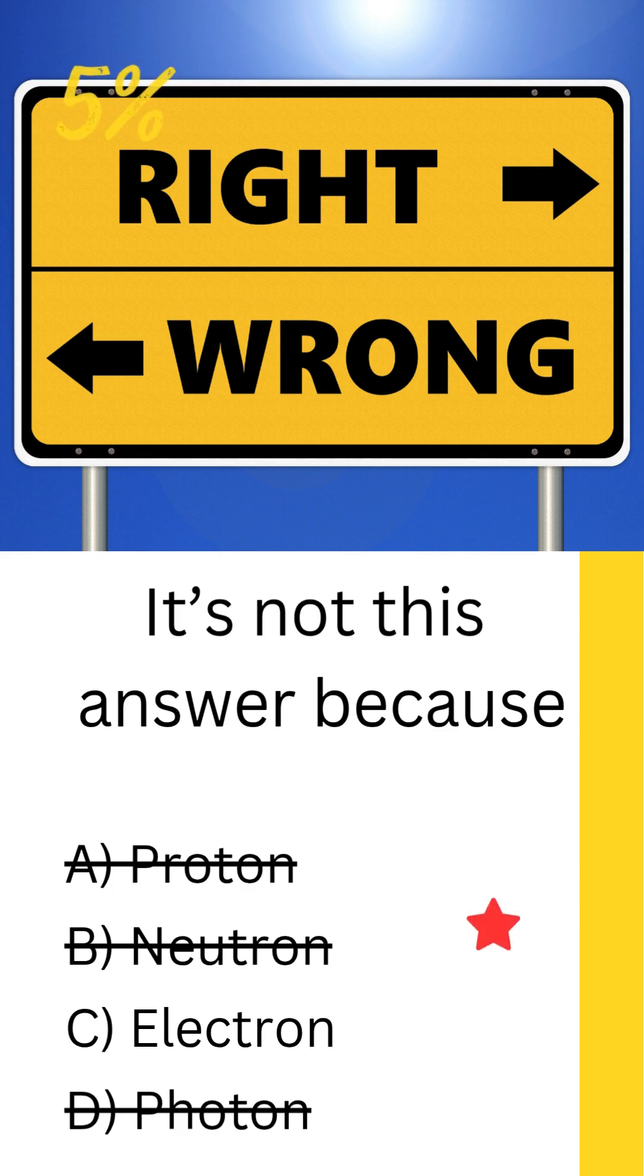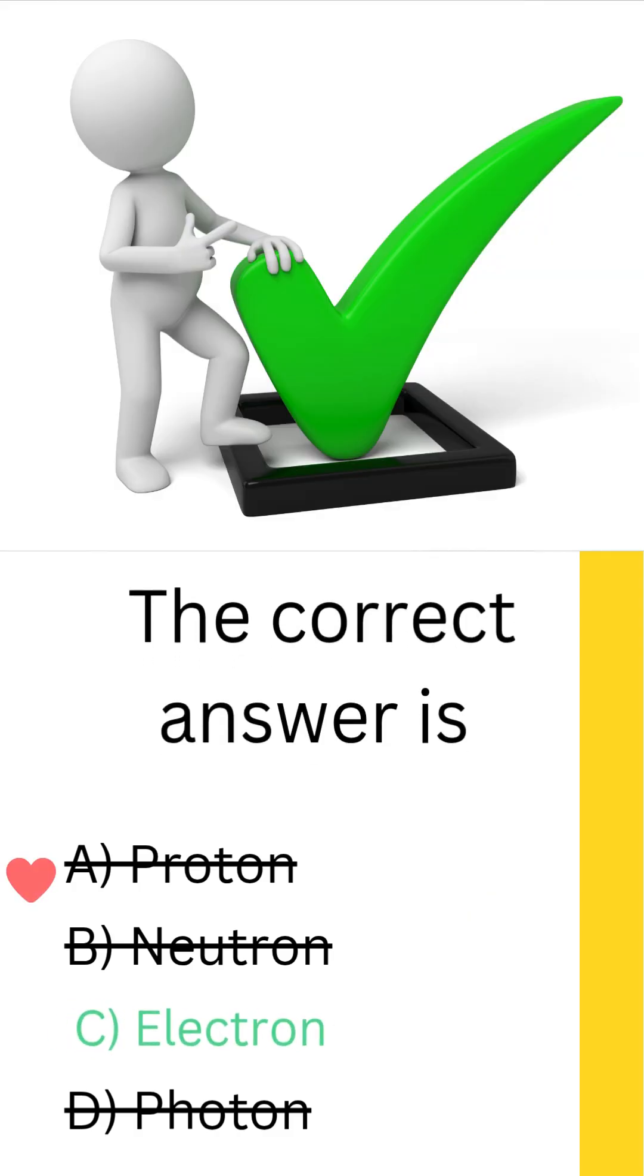it's not the proton. That's the particle with a positive charge found in the nucleus of an atom. Protons help determine an element's identity, but they definitely aren't the negatively charged ones. The correct answer is the electron. Electrons carry